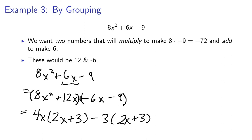And now, this was why we used the 12 and negative 6, because now we have a common factor that we can pull out. And I'm going to finish this over here.